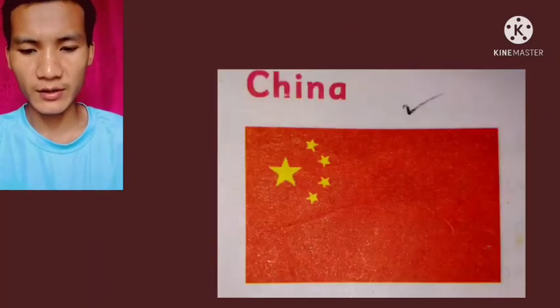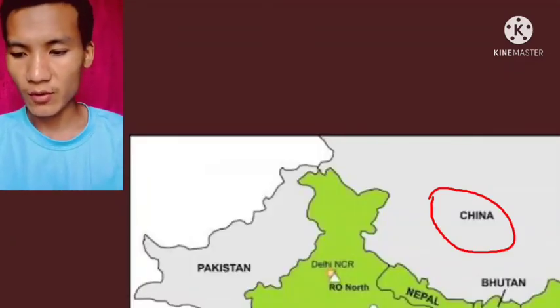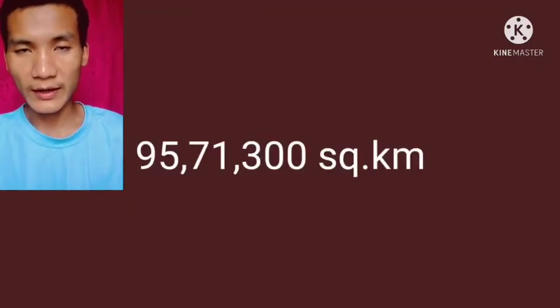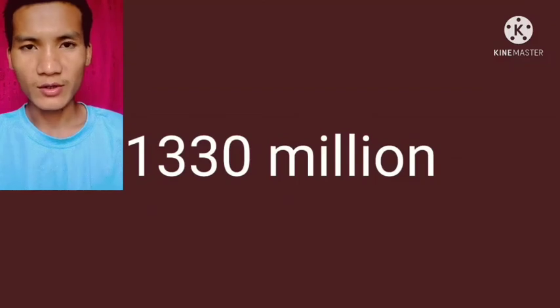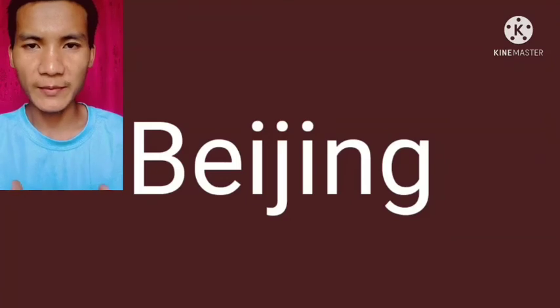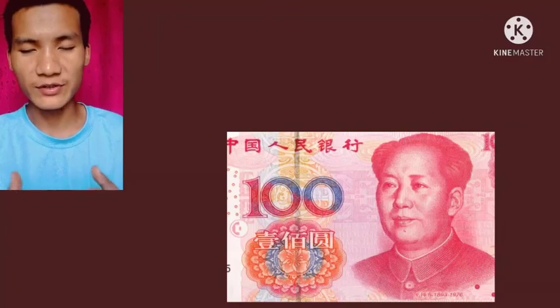Now let's discuss China. China is in the north of India and has a long border with India. China has an area of 95,71,300 square kilometers and a population of over 1,330 million — the largest population in the world. Beijing is the capital of China. The official language is Mandarin Chinese, and the currency of China is called the Yuan.